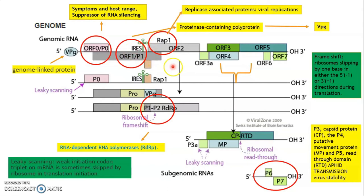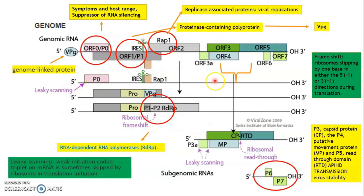Scientists have recently described that Potato Leaf Roll Virus has 10 ORFs, though older diagrams show seven. Discoveries are still ongoing. The coat protein covers the virus, and the movement protein assists in the movement of PLRV within the plant. Each protein has a different function, and that concludes the discussion of the genome.